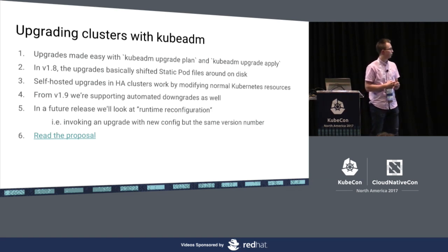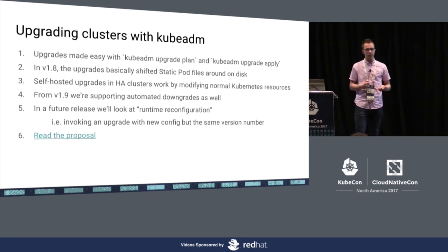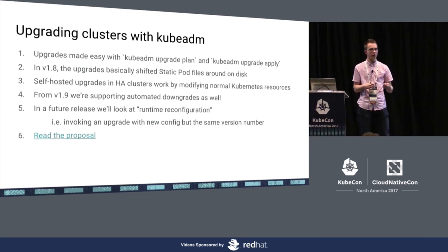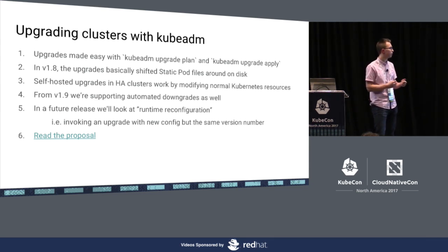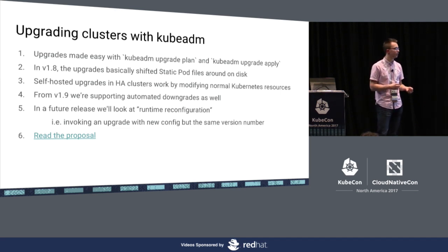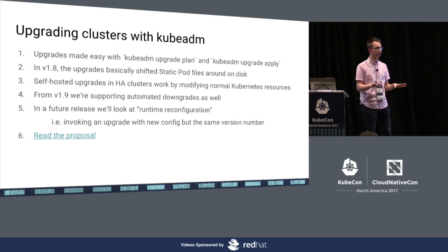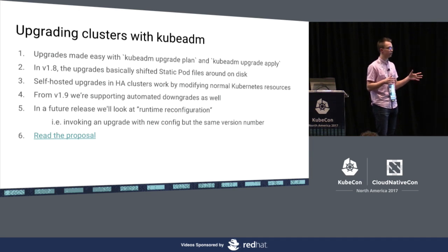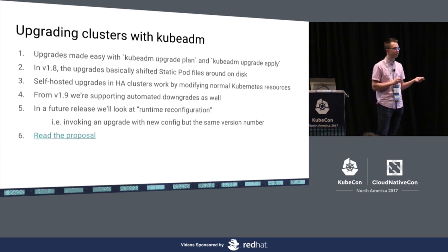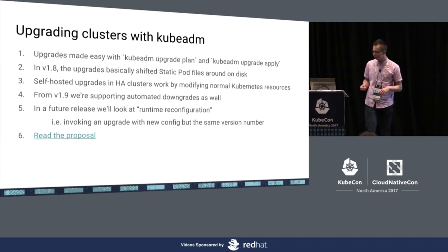In 1.9 we're also supporting automated downgrades. In a future release we might look at runtime reconfiguration — basically kubectl apply for a cluster. So if you started your cluster with some config and a month later found out you should have done something differently, but have user workloads there and don't want to tear everything down, you could just do a kubeadm upgrade apply with a new desired state and KubeADM will roll that out for you. We don't officially support this yet because there are some parameters that could lead to a dangerous or weird state, but technically it's already working if you know what you're doing.